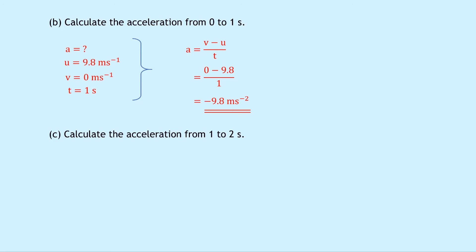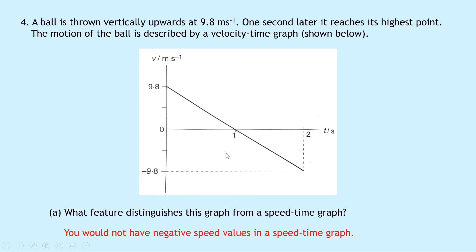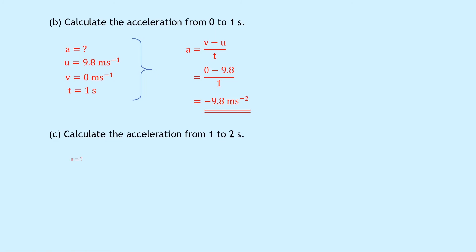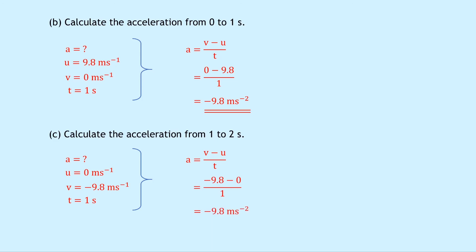Part C asks to calculate the acceleration from 1 to 2 seconds. We're now looking below the x-axis, using minus 9.8 as our final speed. The initial speed is 0 metres per second and the final speed is minus 9.8 metres per second, over time of 1 second. So a equals minus 9.8 minus 0 divided by 1, which again gives minus 9.8 metres per second squared. The same answer is because the ball experiences the same acceleration due to gravity downwards — assuming upwards is positive and downwards is negative.